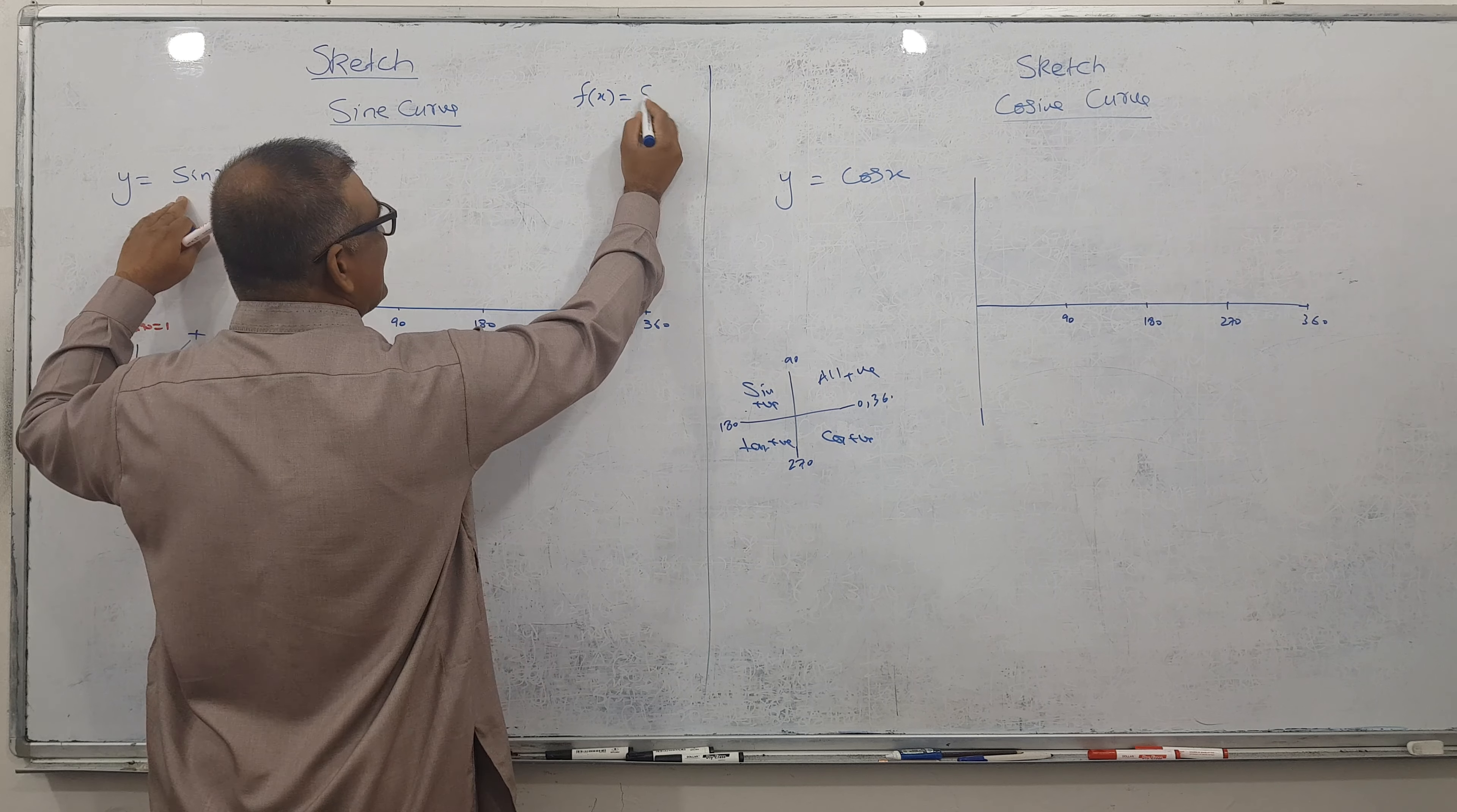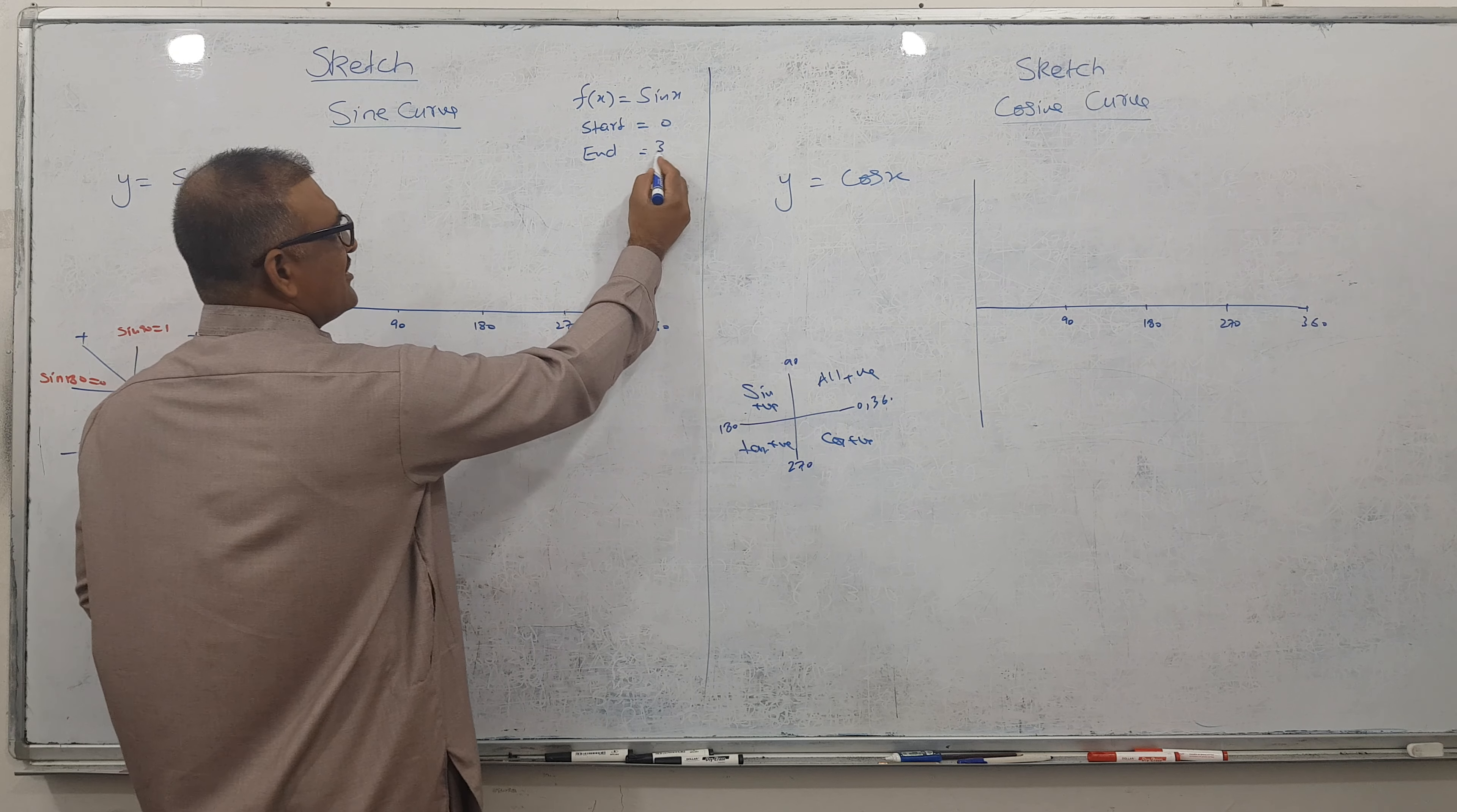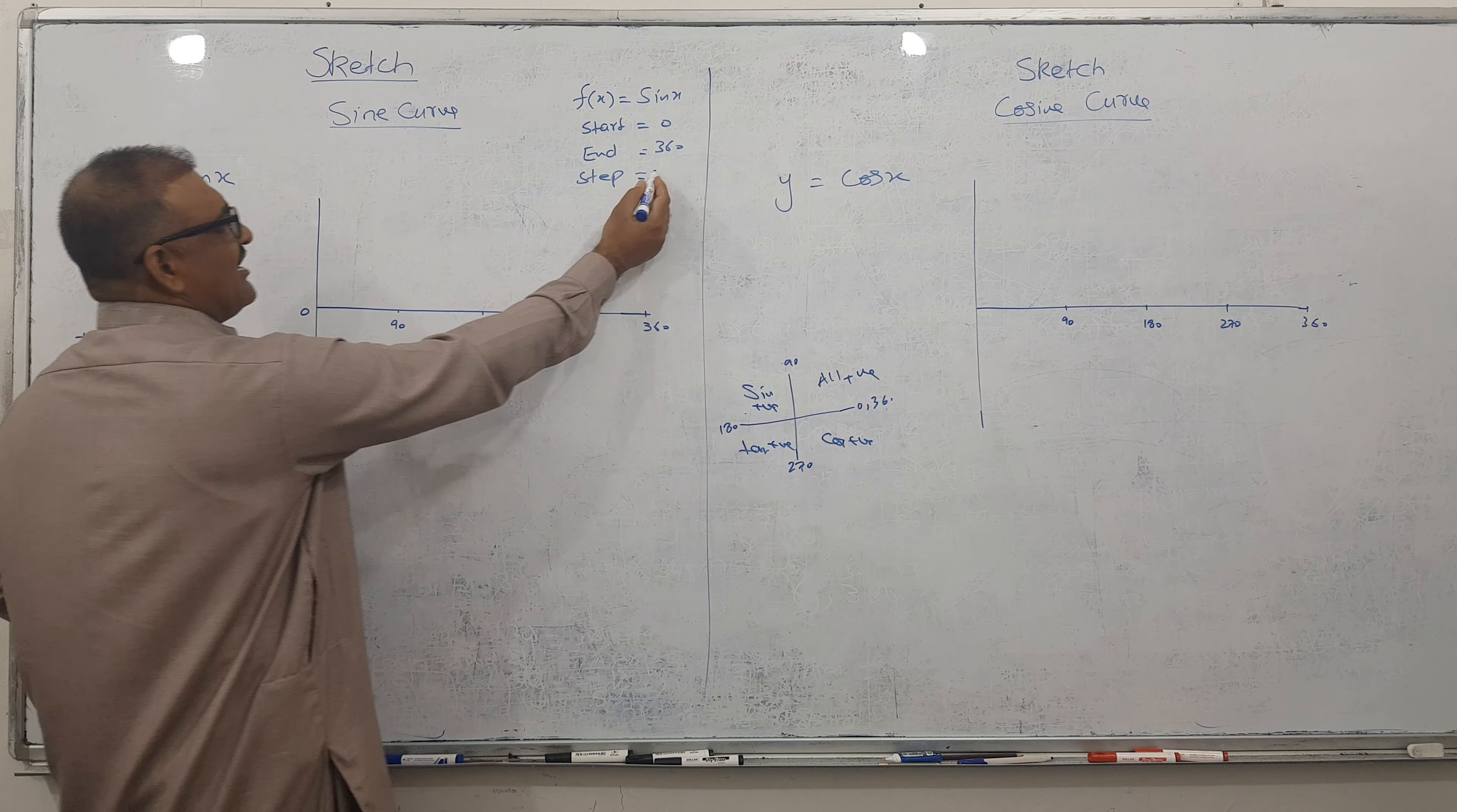You press the button. It asks start from where? You say start from 0. It says ends where? Ends at 360. Step how much? Step means along x-axis how much you want gaps. Actually ideal gap is 30 or as small as you can take. But in this question I will take step 90 degrees.